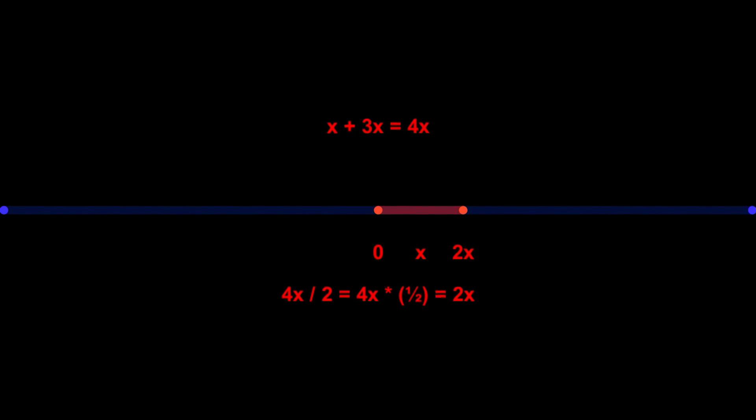Note how multiplication and division with negative numbers flips the entire line over to the opposite side, as we see when we express 4x divided by minus 2 or 4x times minus half as minus 2x.